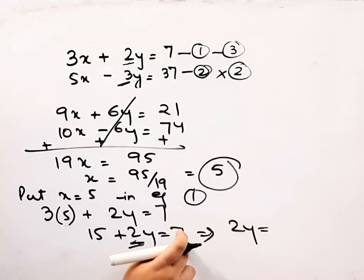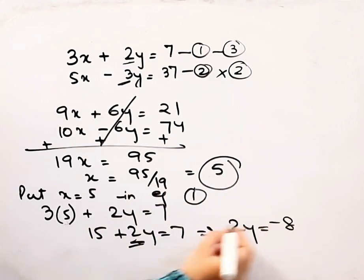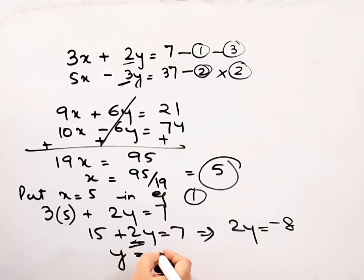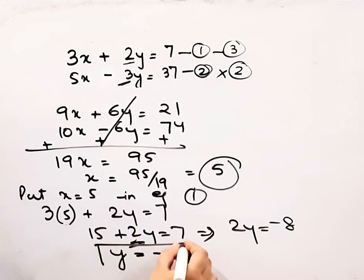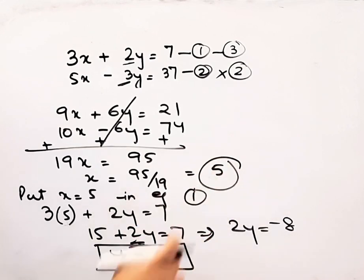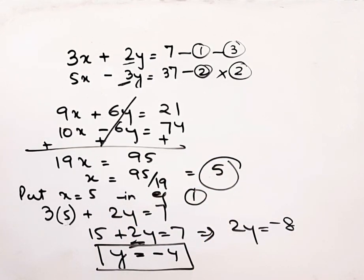2y will be 7 minus 15, this will be minus 8. So here we get y equals minus 4. x equals 5 and y equals minus 4.